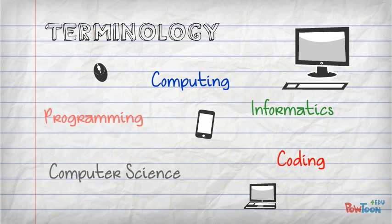The issue of terminology is something we address in the second module, but for now it is important to understand that computing is usually considered the broadest term, which includes things like coding, programming, how to use software packages, and safe use of the internet. On this course we generally feel that all these areas should be part of what is taught at schools, but while addressing computing as a whole subject, we focus primarily on issues around coding and programming, and less on using software or safe use of the internet.